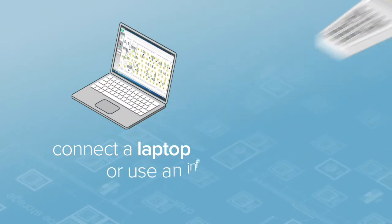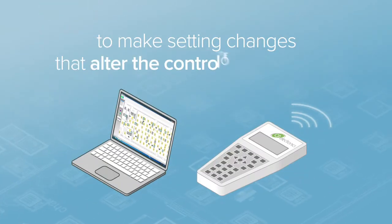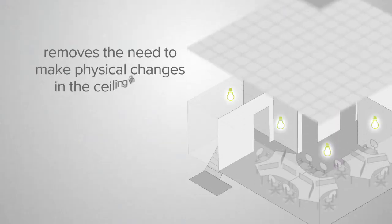Connect a laptop or use an infrared programming handset to make setting changes that alter the control of the lighting. This removes the need to make physical changes in the ceiling void.